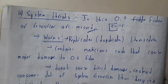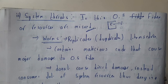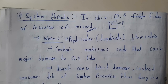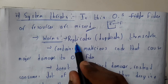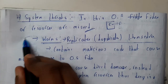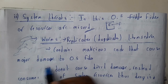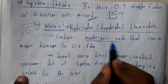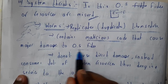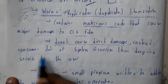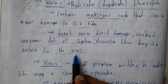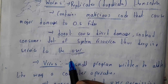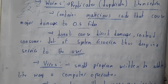Worms will not damage your system directly; they reduce system utilization by running in the background and making your system run slow. Worms replicate themselves — one worm becomes two, two become four, then eight, sixteen, and so on. They contain dangerous code that may damage OS files, but they do not cause direct damage. Instead, they consume a lot of system resources, denying services to the user, which is why your system may slow down or freeze.